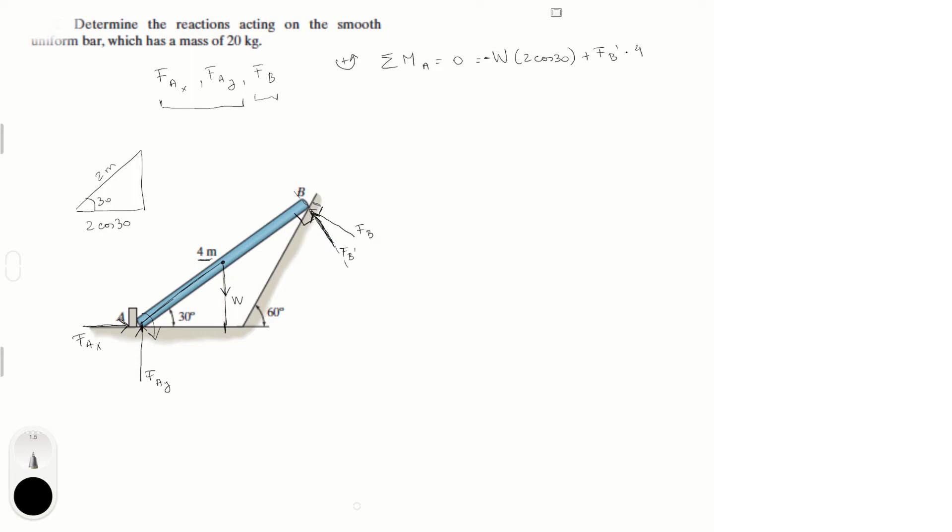Well, this is just a bunch of trigonometry. So I'm going to draw a vertical line right here. And I know this is 90 degrees. This is 60 degrees. So this is 30 degrees. Right? I also know that this is 30 degrees. So this is 60 degrees, which means that this is 30 degrees.